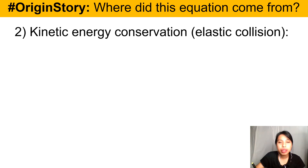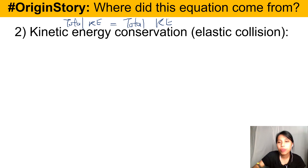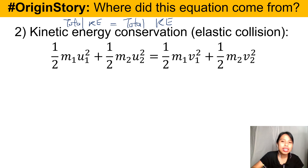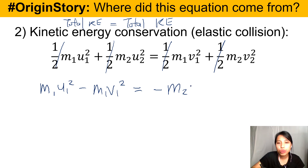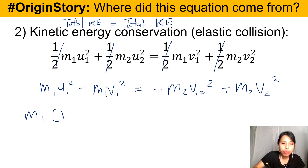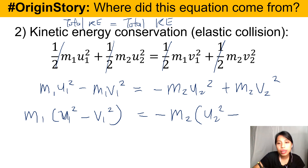Next, kinetic energy conservation — total kinetic energy before equals total kinetic energy after the collision. Multiply every term by 2 to remove the halves. Group all the ones on the same side: M1(U1 squared minus V1 squared) = M2(V2 squared minus U2 squared). Factorizing out the masses gives M1(U1² - V1²) = negative M2(U2² - V2²). This looks very similar to the momentum equation.